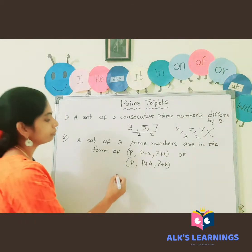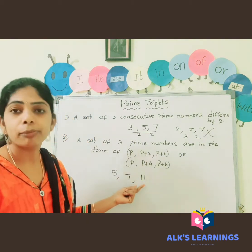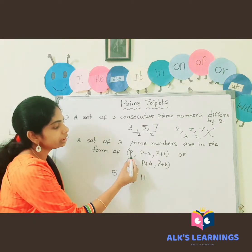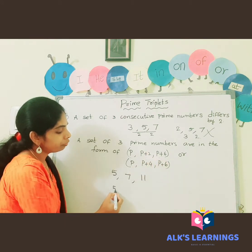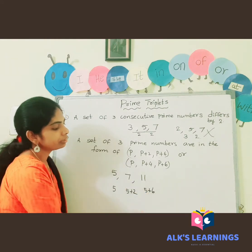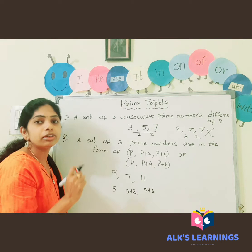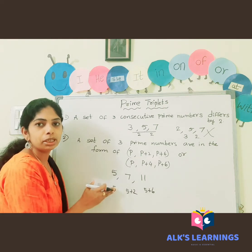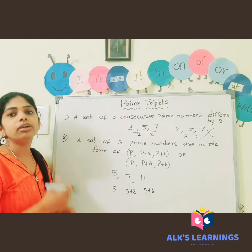Let's take one example: five, seven, eleven. These three are prime numbers and satisfy the condition P, P+2, P+6. Here, P is five; five plus two is seven; and five plus six is eleven. So these three numbers come under prime triplets — this is an example of the form P, P+2, P+6.